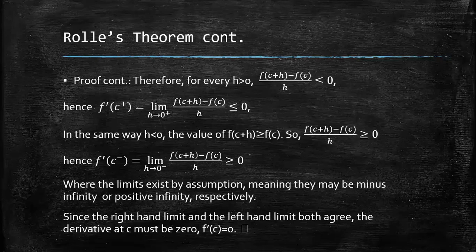Since the right-hand limit and the left-hand limit both agree, they both may equal zero, the derivative at c must be zero. f'(c) is equal to zero. There you go, Rolle's theorem.